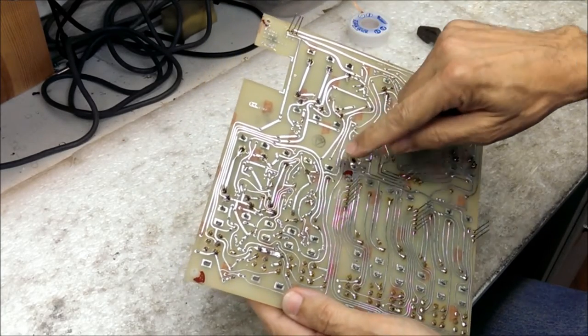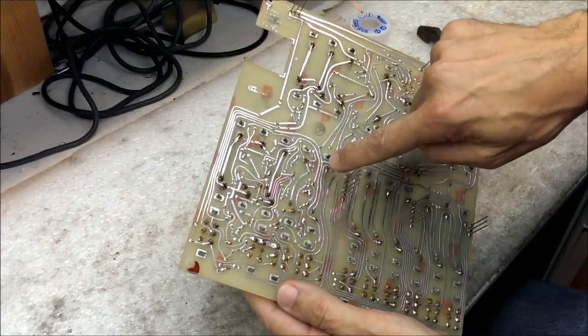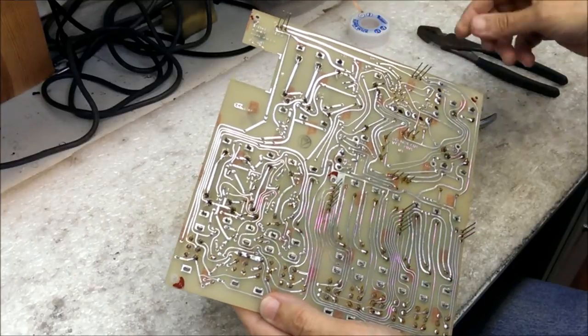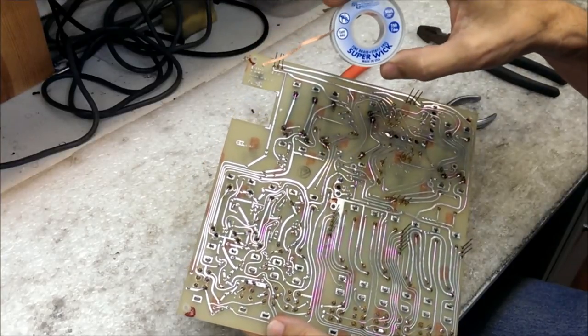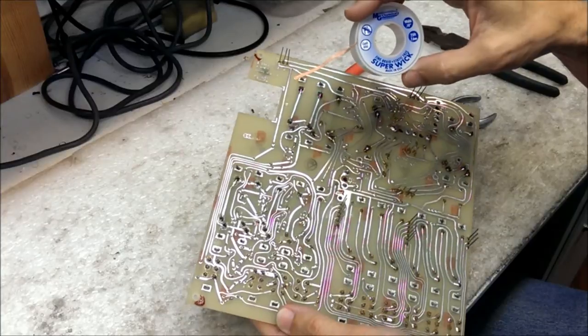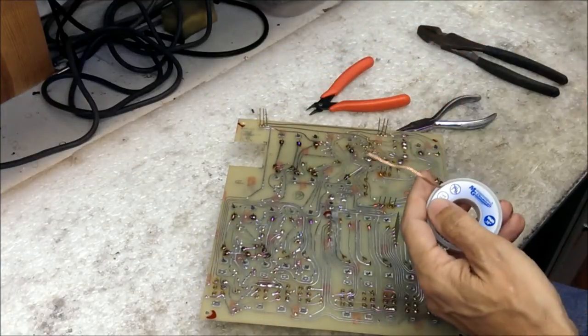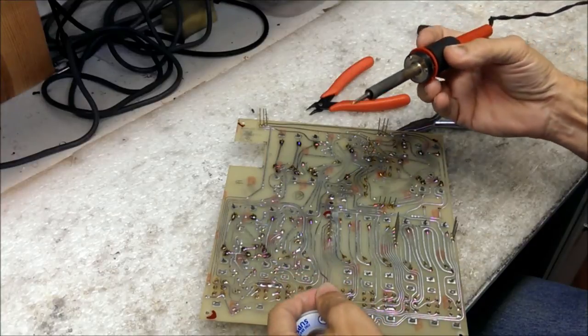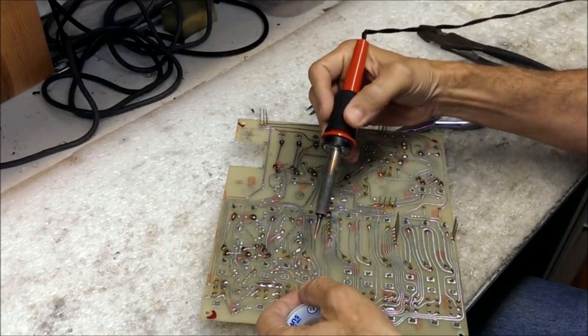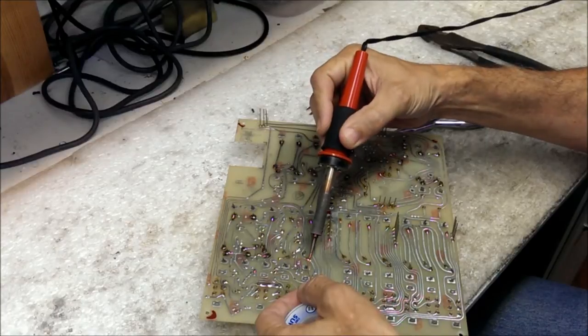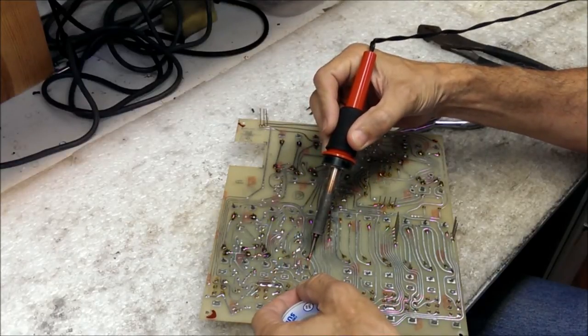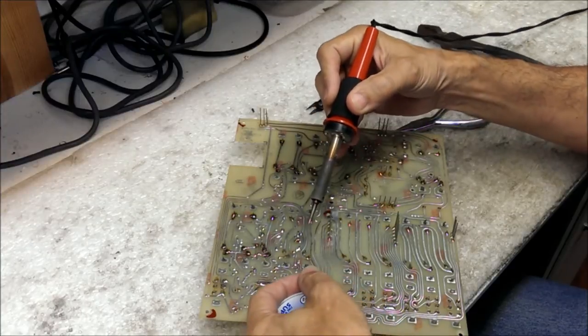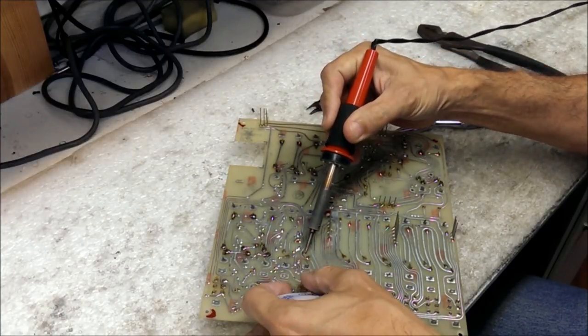And then once that's done, we'll want to desolder the pot from the three points that it comes through the circuit board. And for that, we're going to use some desoldering braid. So we'll just put that braid up against the solder point, apply heat to the braid itself, and then that's going to soak up the solder.